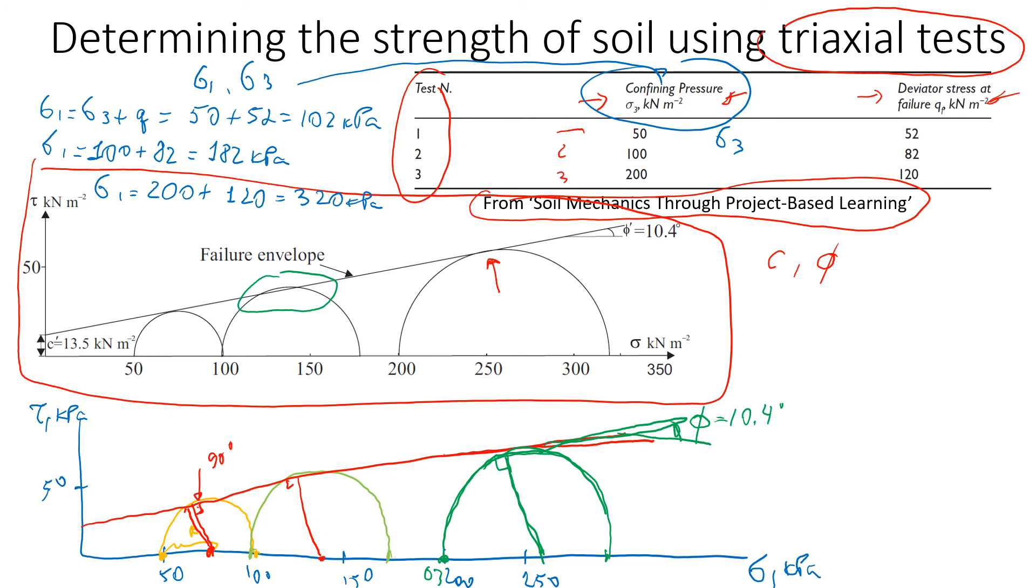Here you will see where this failure envelope line crosses the shear stress axis. This is going to be cohesion. Again, we get it from the sketch.